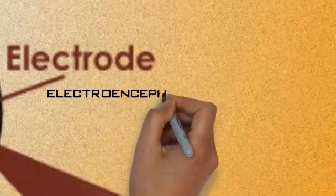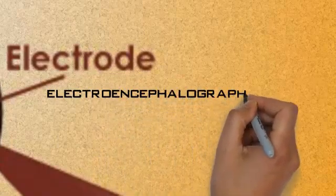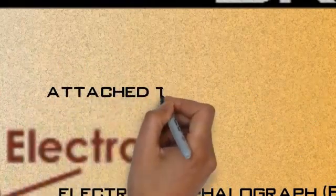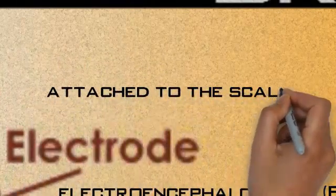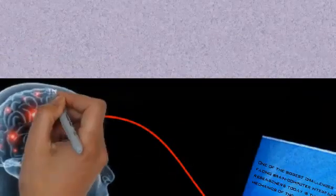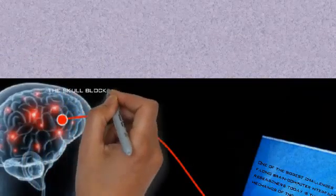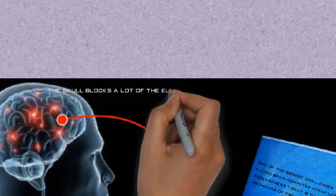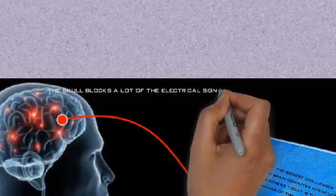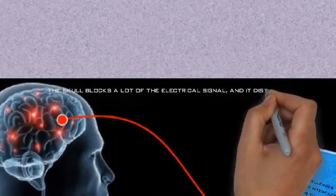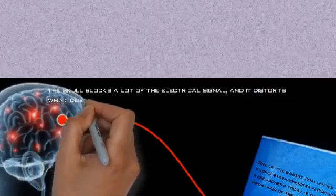The electrodes can read the brain signals. However, the skull, you can say, is a kind of insulating material that blocks a lot of electrical signals and distorts what does get through. So scientists need to upgrade the technology to the next level to get a higher resolution signal.